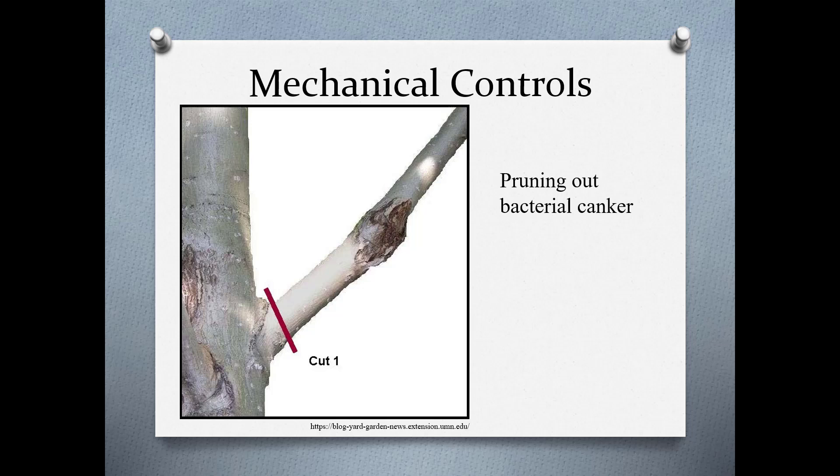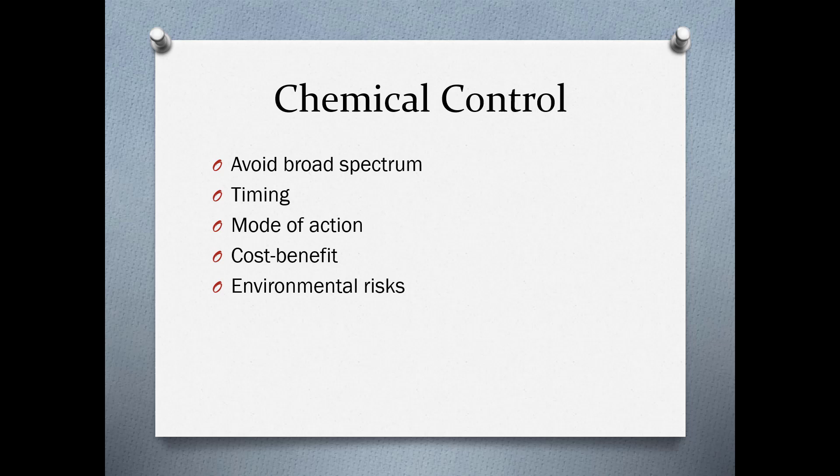In some cases you can prune things out—for example, bacterial canker can be pruned out, but you need to cut at least six inches behind the damaged area. However, you should keep monitoring after pruning and may even want to remove the plant entirely, as it may not be feasible to prune out bacteria if you're trying to sell trees.